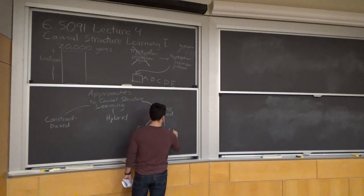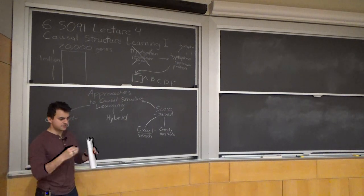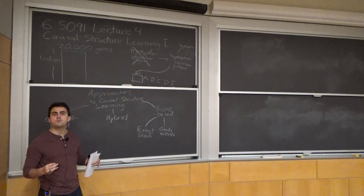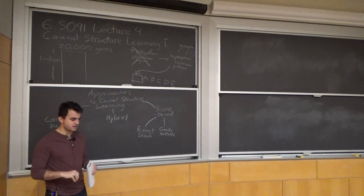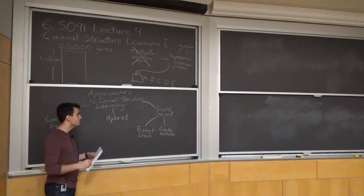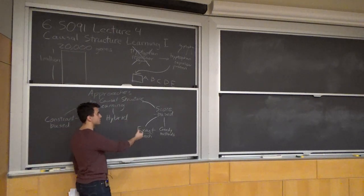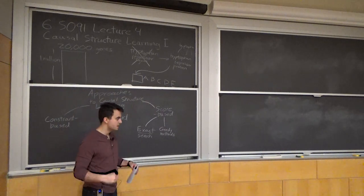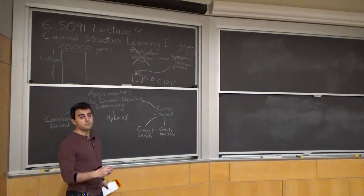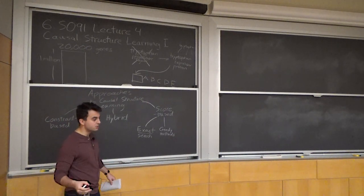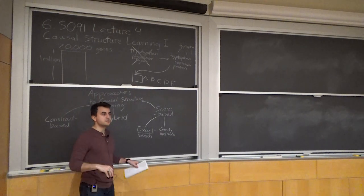Greedy methods perform a greedy search over the search space. They initialize at either a randomly chosen graph or one chosen by some heuristic, define a neighborhood of graphs you can move to — by adding, deleting, or flipping edges — then look at all neighbors, see how the score changes, and move to the one where the score increases the most. You keep repeating until you get stuck at a local maximum where all neighbors have worse score.